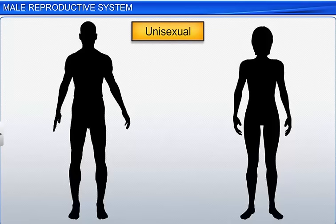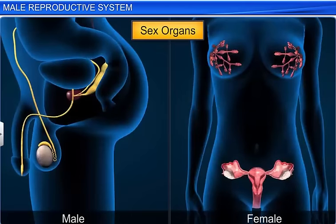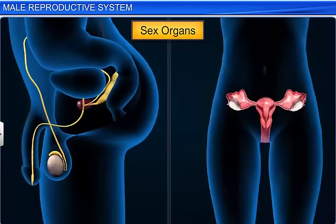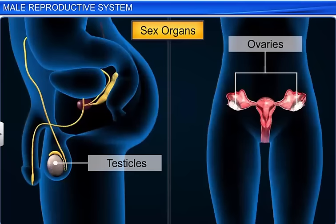Humans are unisexual and viviparous. The major reproductive organs include the external genitalia, like the penis in males and the vulva in females, along with a number of internal organs including the gamete-producing gonads, like the testicles in males and the ovaries in females.